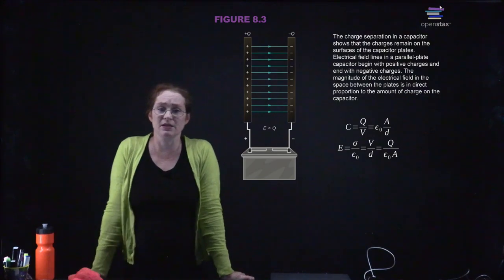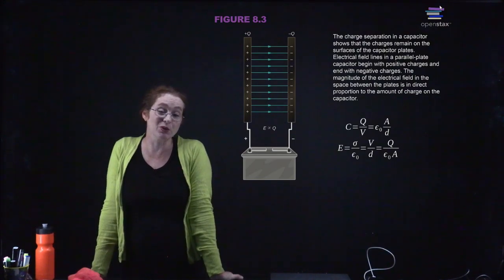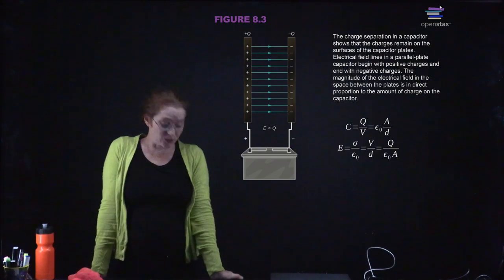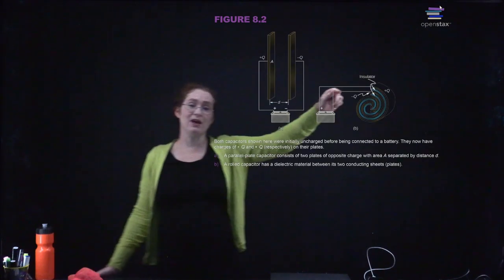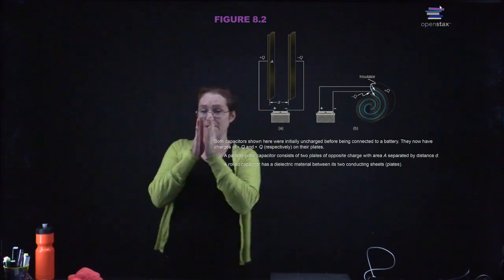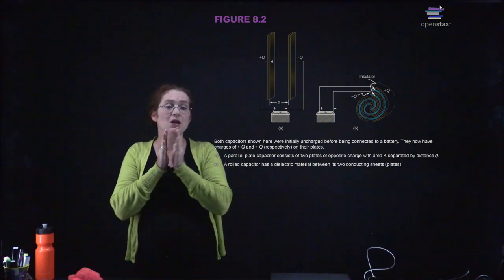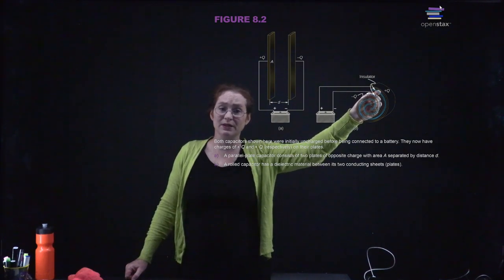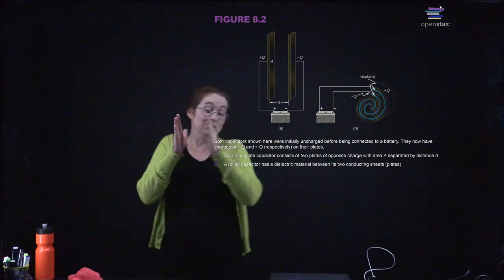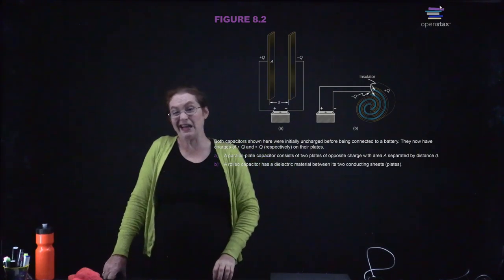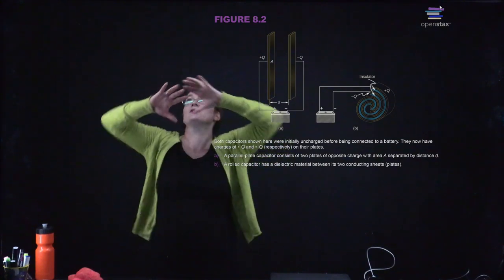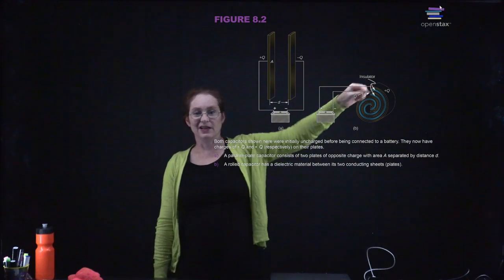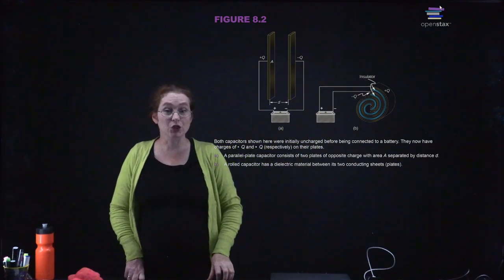Even if this is not actually what most capacitors look like, you can think about them as parallel plates because, to a good approximation, they are. Even if you have one of these jelly rolls, the separation between the two plates is very, very small. If you were a charge sitting on a point of that capacitor, you would not see the curvature anyhow — the capacitor is so large compared to the curvature that if you're a little electron sitting on there, the curvature doesn't make a huge difference.